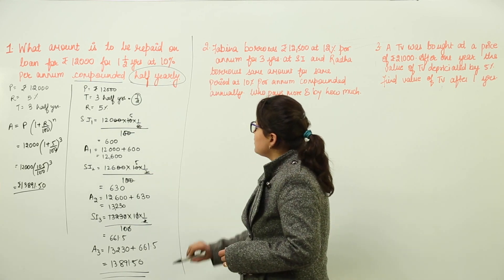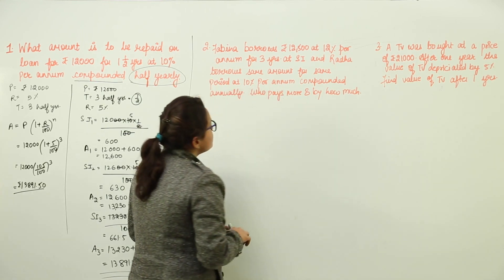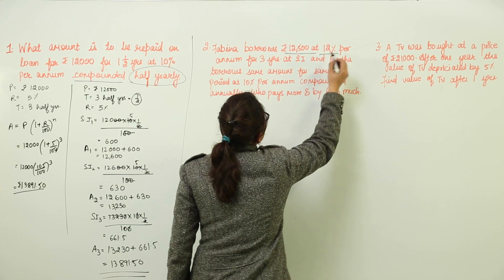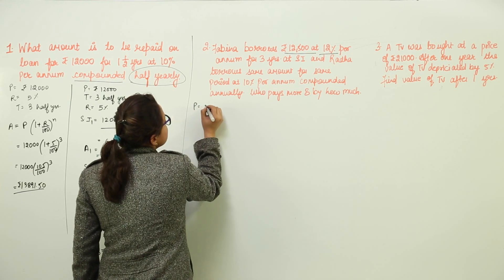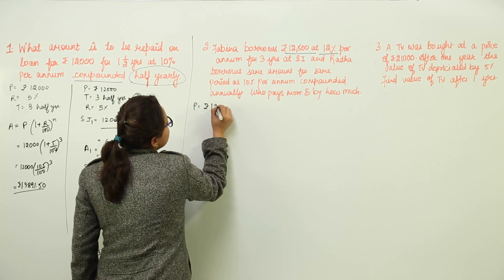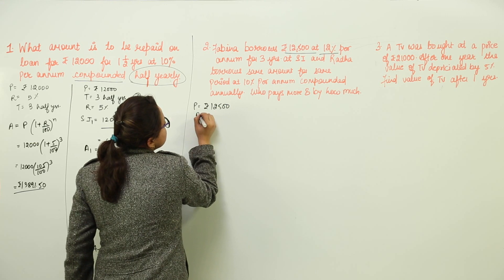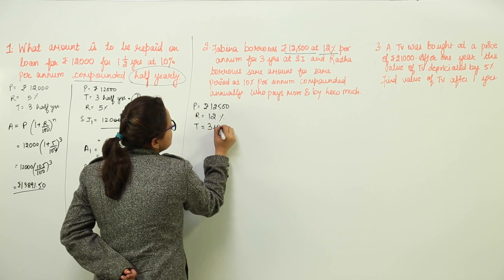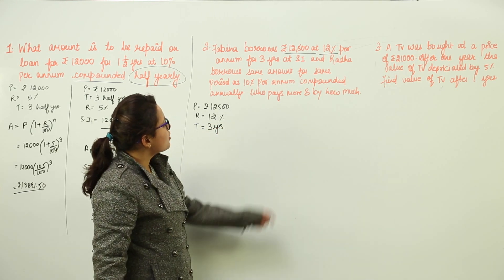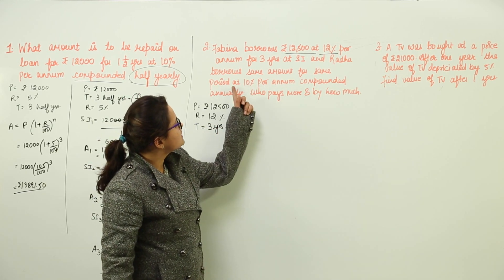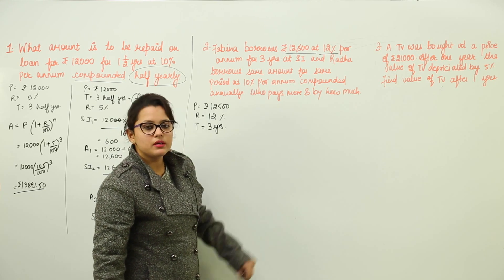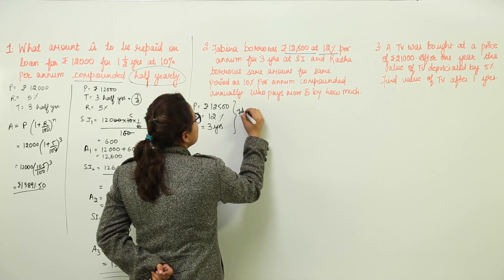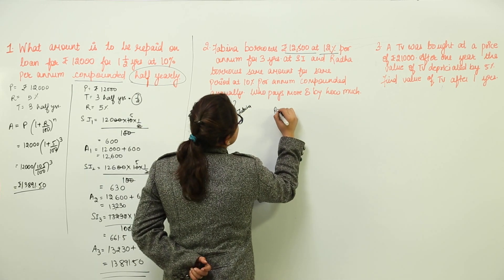Let us move on to the second question. Fabina borrows Rs. 12,500 at 12% rate per annum. That means, the principal is also provided to us that is Rs. 12,500. The rate is given to us which is 12% and time period is also provided to us which is 3 years.